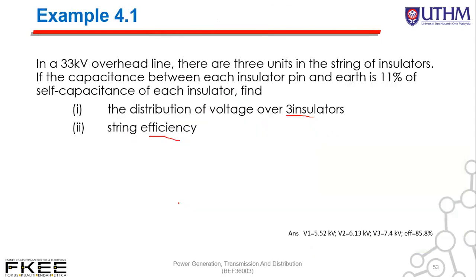Example 4.1: In a 33 kV overhead line, there are 3 units in a string of insulators. If the capacitance between each insulator pin and earth is 11% of the self-capacitance of each insulator, find the distribution of voltage over the 3 insulators and also the string efficiency. We have 33 kV, 3 units (since each disc is 11 kV × 3 = 33 kV), and 11% shunt capacitance. We want to find V1, V2, V3 and the string efficiency.